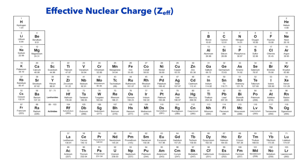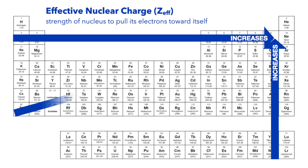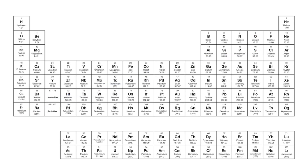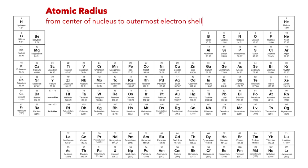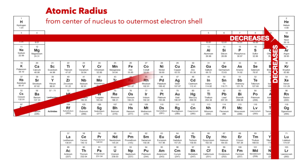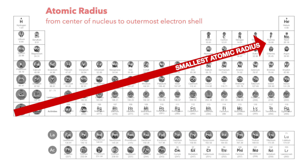Effective nuclear charge is the strength of the positively charged nucleus to pull its negatively charged electrons toward itself. Effective nuclear charge increases going right in a period and up in a group, which simply means atoms that are closest to the top right corner of the periodic table will have the highest effective nuclear charge. Atomic radius, which is measured from the center of the nucleus to the outermost electron shell, decreases going right in a period and decreases going up in a group, which simply means that atoms closest to the top right corner of the periodic table will have the smallest atomic radii, or simply put, are the smallest atoms.